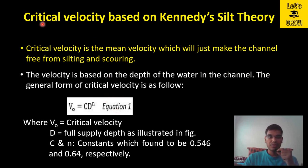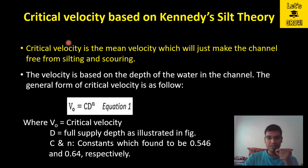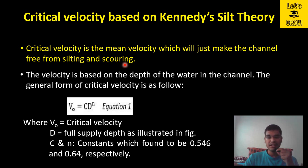Now we discuss critical velocity based on Kennedy's Silt Theory. There should be a minimum velocity such that there is no accumulation or deposition of silt in the canal. This velocity is known as the critical velocity — it is the mean velocity that will just keep the channel free from both silting and scouring. The design velocity should be such that there is no erosion and no deposition of silt in the canal.